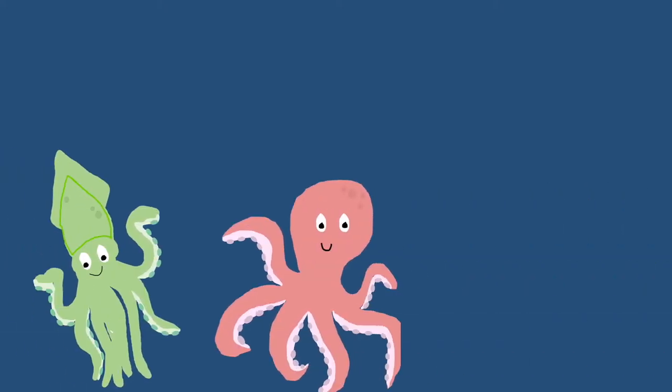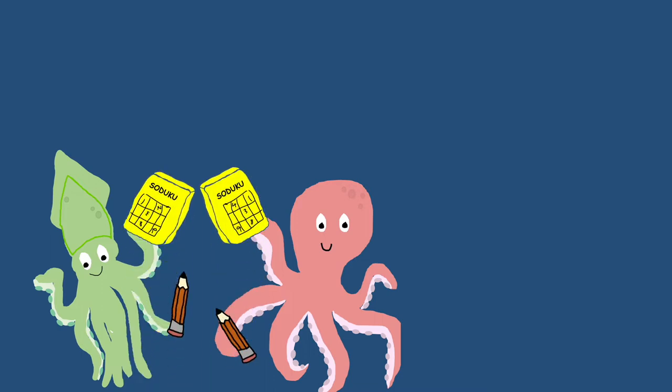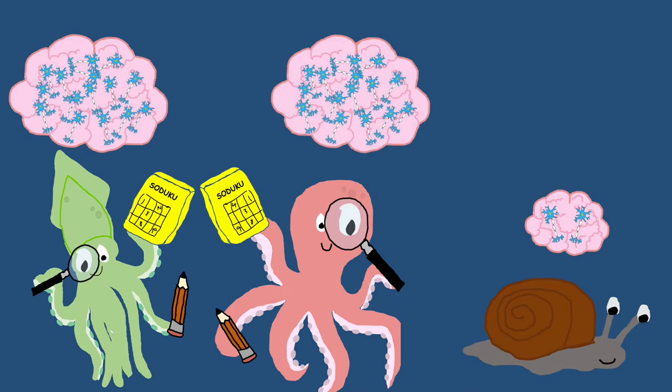Cephalopods are a class of invertebrate species that have evolved a notably complex nervous system, allowing them to solve difficult problems and learn observationally. Compared to other molluscs, the cephalopod brain is disproportionately larger and has greater neuronal density.